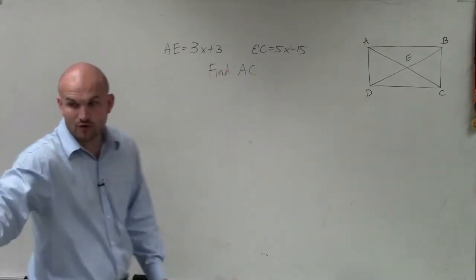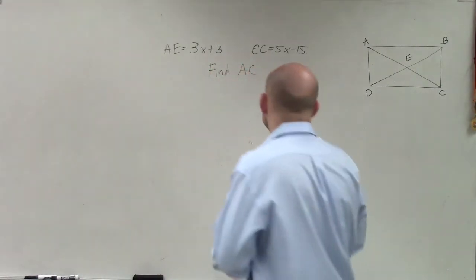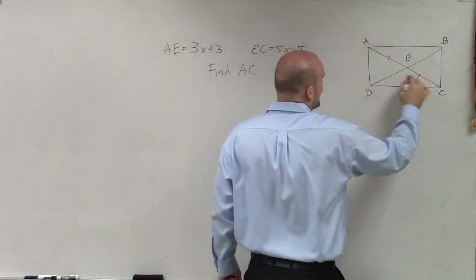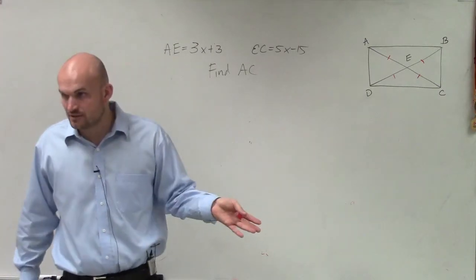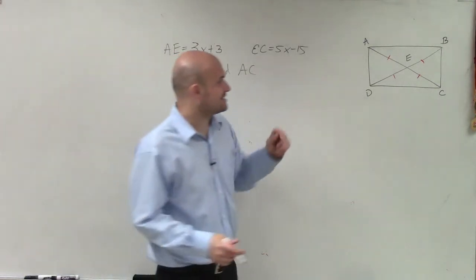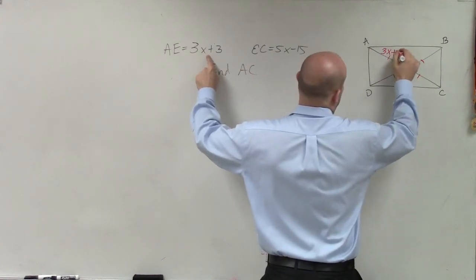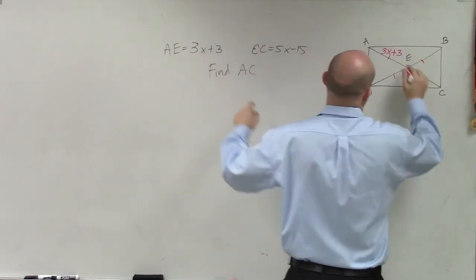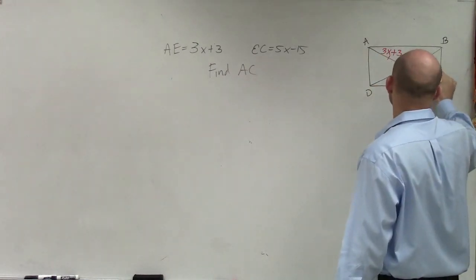Now, we do know they say in the directions that this is a rectangle. So we know that rectangles, their diagonals are bisected, right? And their diagonals are equal in measure. But they're bisected. So they say that this is 3x plus 3, AE, and then they say that EC is 5x minus 15.